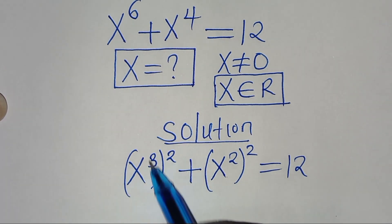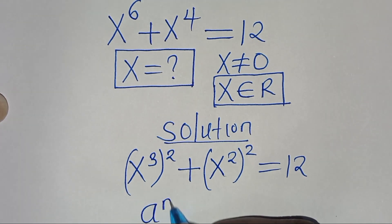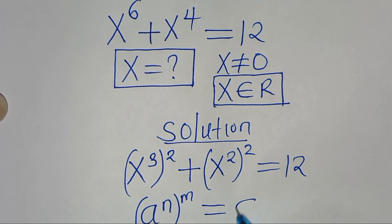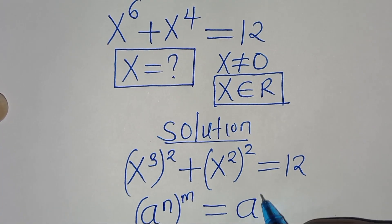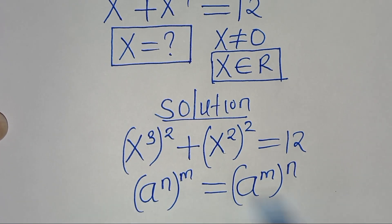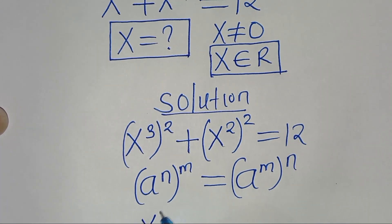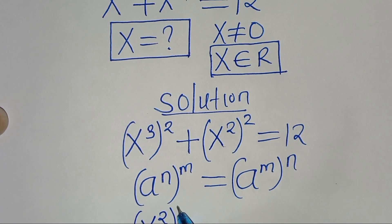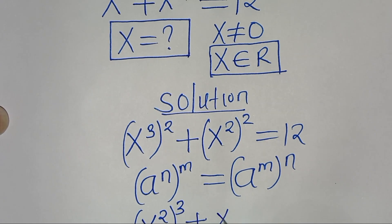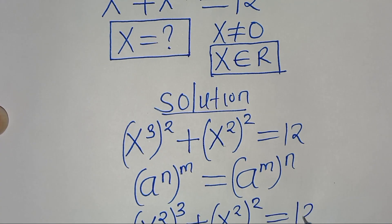Now, x to the power of 3 raised to the power of 2 is in the form of a to the power of n raised to the power of m, and this can be expressed as a to the power of m raised to the power of n. Applying this exponent property, we have x to the power of 2 raised to the power of 3, then plus x to the power of 2 raised to the power of 2, this is equal to 12.